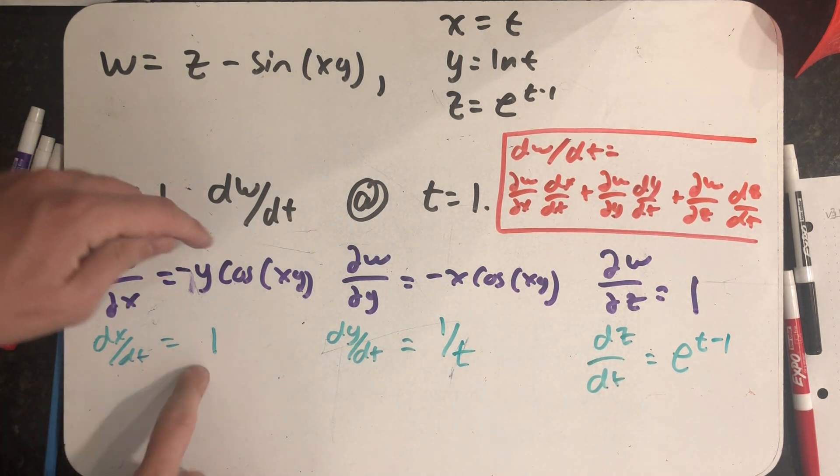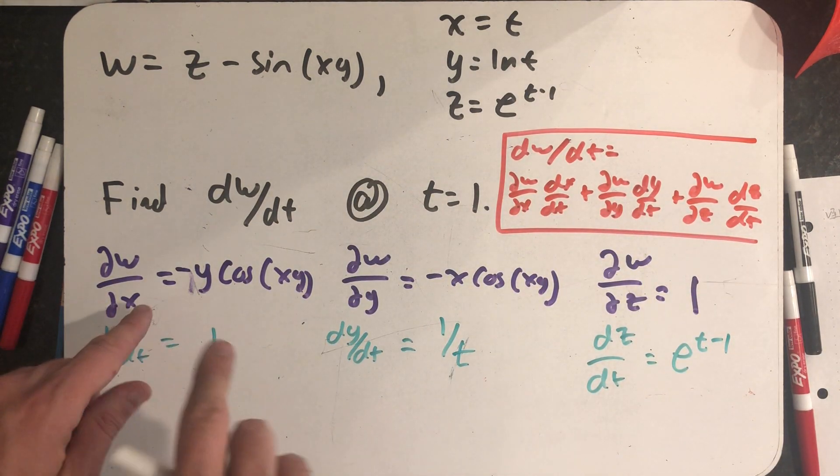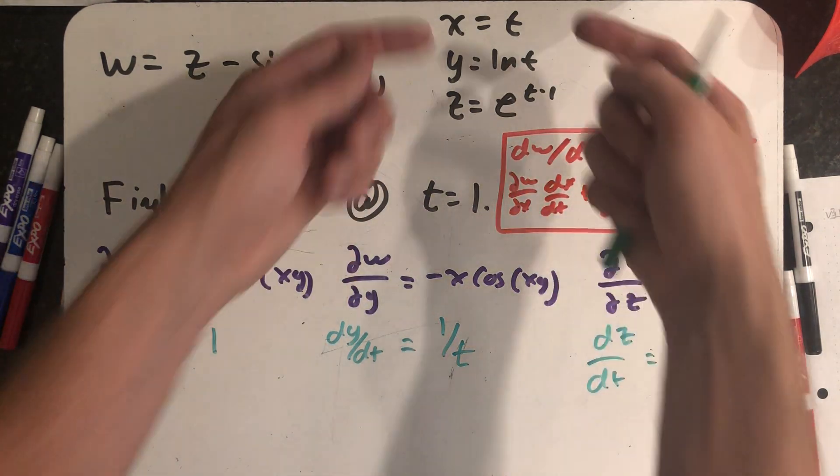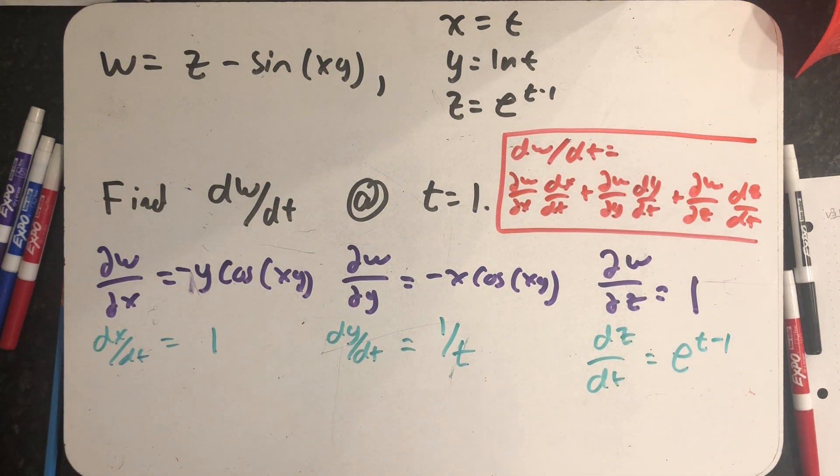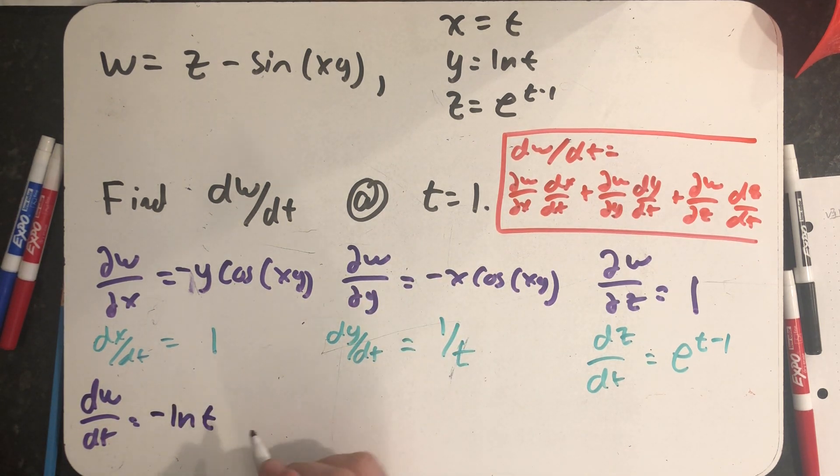I need to take products to find my chain rule formula, and then I need to replace x, y, and z with, well, x, y, and z. So dw/dt is this times this. Well, that's a one, so it's just this. So minus y, which would be minus the natural log of t, times cosine of x times y, so t times the natural log of t.